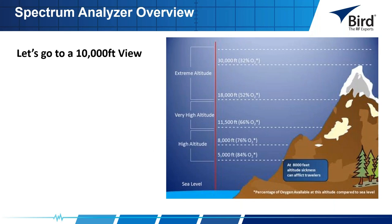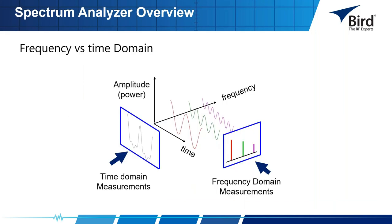At a 10,000-foot view: traditionally when you want to look at an electrical signal you use an oscilloscope to see how the signal varies with time. This is important information, however it doesn't give you the full picture. To fully understand the performance of your device or system, you also want to analyze the signal in the frequency domain — a graphical representation of the signal's amplitude as a function of frequency. The spectrum analyzer is to the frequency domain as the oscilloscope is to the time domain.